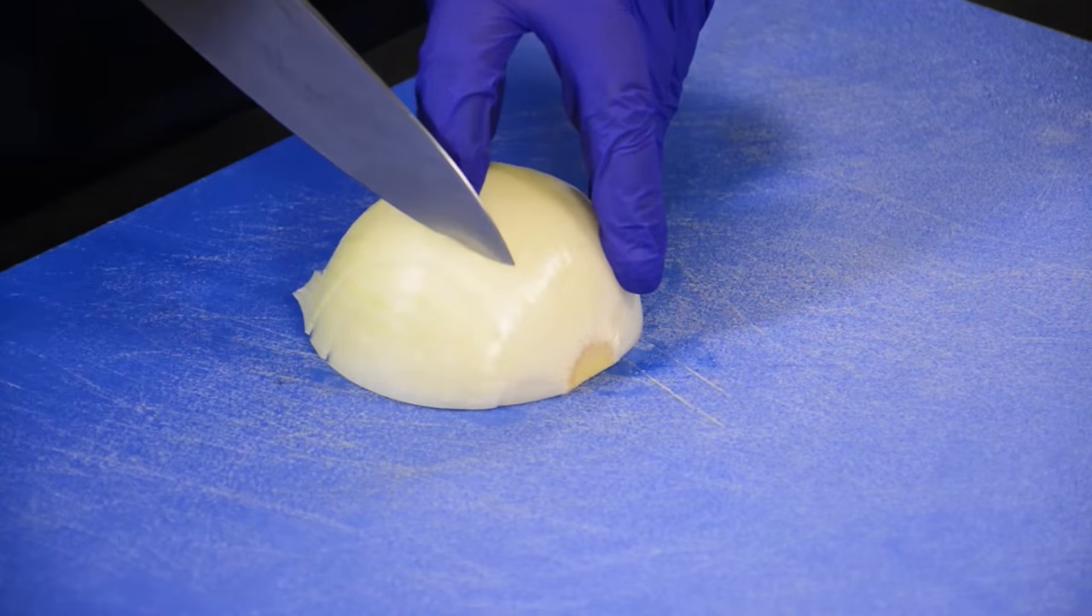I'm going to start slicing. I don't want to cut all the way to the back - I want to leave the back of the onion about half an inch intact so it can hold all my cuts. So we don't cut all the way through. We start here and we're going to do quarter-inch slices.